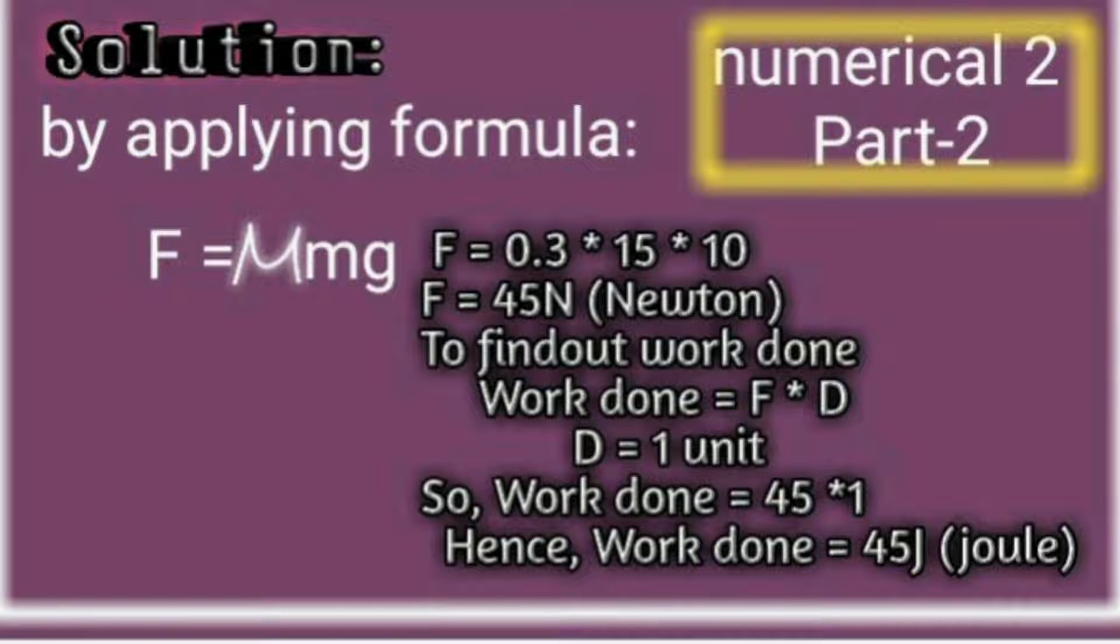Now to find out work done. Work done equals force multiplied by distance. Here, D equals 1 unit as mentioned in the question. So work done equals 45 multiplied by 1. The answer is work done equals 45 joules.